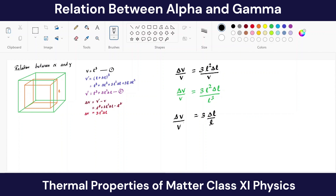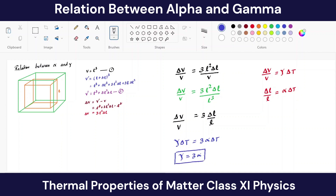We know that ΔV/V = γΔT, where γ is the coefficient of volume expansion, and ΔL/L = αΔT, where α is the coefficient of linear expansion. Substituting: γΔT = 3αΔT, so the coefficient of volume expansion γ is 3 times the coefficient of linear expansion α.